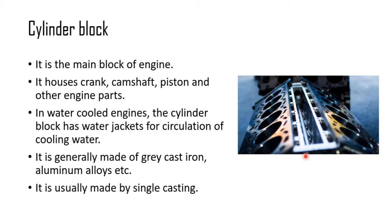The cylinder block — as you can see in the diagram — is the main block of the engine. This is where the cylinder, liner, and piston will be assembled. It is generally made of grey cast iron or aluminium alloy, and it is made by the process of single casting. This is very important.